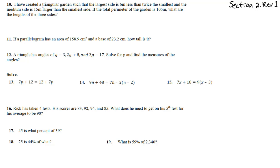Number 10: a triangular garden, so we need a triangle where the largest side L is 6 meters less than twice the smallest side, the medium side is 15 meters larger than the smallest side, and the total perimeter of the garden is 105 meters.